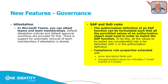On the SAP side, there are two improvements. First, the authorization definition of subfunctions can now be formulated such that all permitted values of an authorization object must exist in order. Second, there are compliance rule properties that have been extended. Behind this is a new joint venture with a company that builds compliance rules specifically for SAP across different business types, working very closely with One Identity.